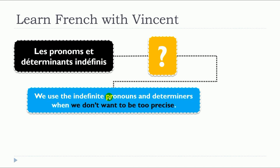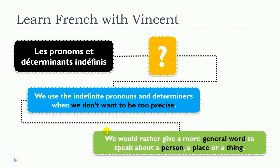We use the indefinite pronouns and determinants when we don't want to be too precise. These déterminants et pronoms indéfinis are used when we don't want to be too precise, and we would rather give a more general word to speak about a person, a place, or a thing.